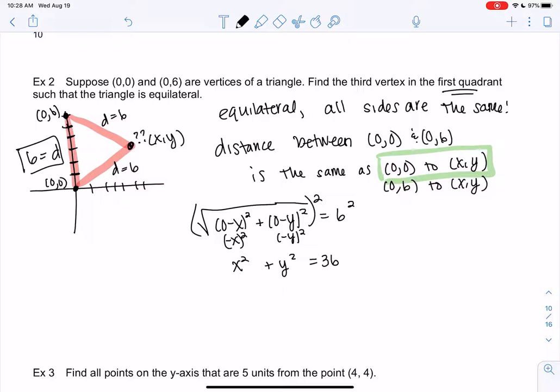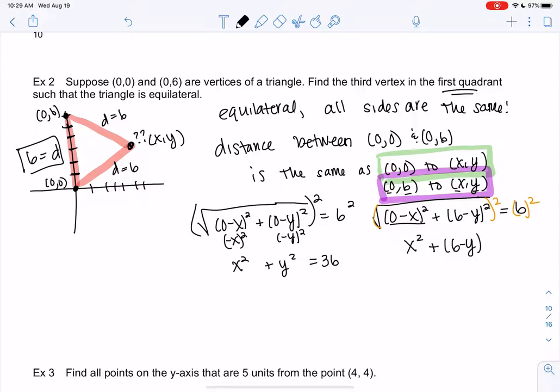So we can't quite solve this, but maybe when I set up the second one we'll be able to solve it better. So same idea. We get square root of (0 minus X) all squared, those are my X1 and X2, plus my Y1 is 6 minus Y all squared equals 6 again, because the distance is the same. I'll go ahead and square both sides just to get rid of the square root. 0 minus X squared again is X squared. The 6 minus Y squared is a little trickier, so we'll leave it as is. Equals 36.